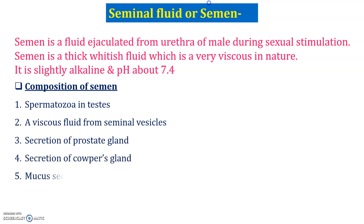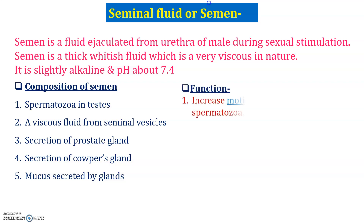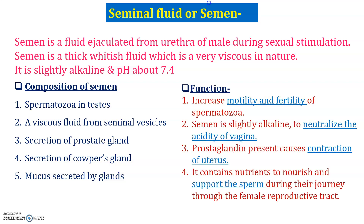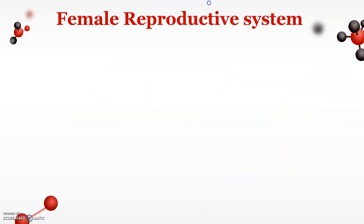What is the composition of semen? Semen contains spermatozoa along with different secretions from various glands present in the male reproductive organs. The functions of semen include aiding motility and fertility of sperm, neutralizing the acidity of the vagina, supporting uterine contraction, and providing overall support to the sperm.